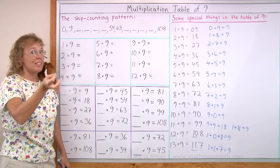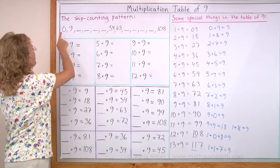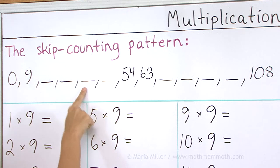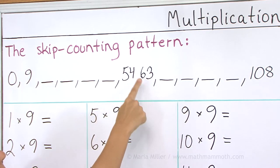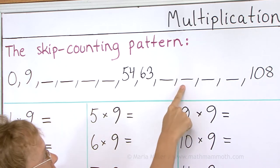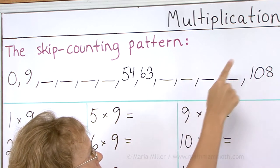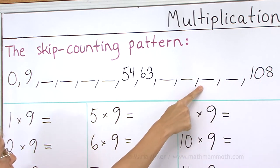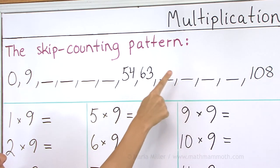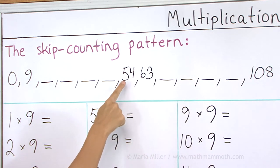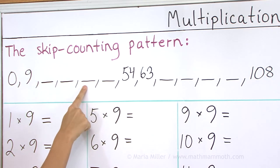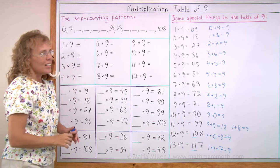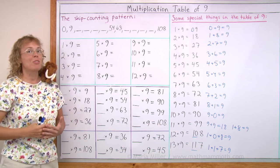And now from the beginning till the end, and then back. 0, 9, [skip counting sequence] 108. Backwards. 108, [counting back] 9 and 0. As usual, make sure that you learn that before going on.